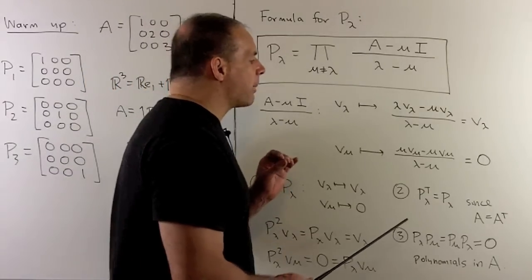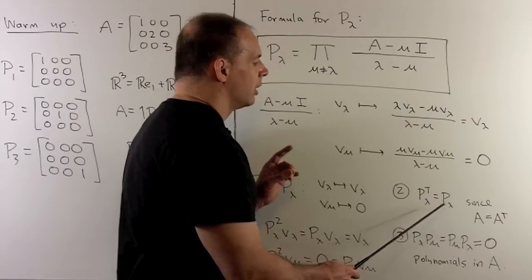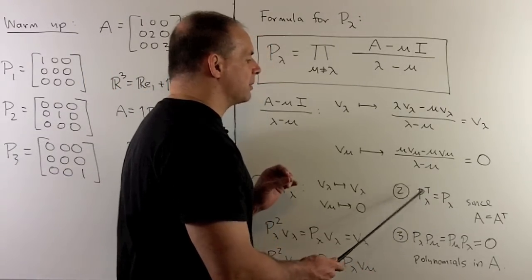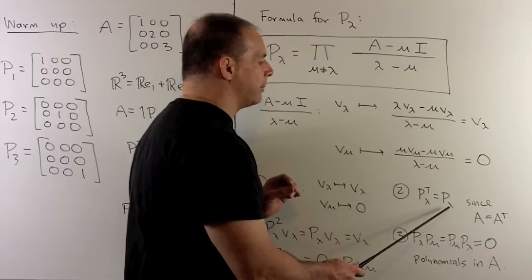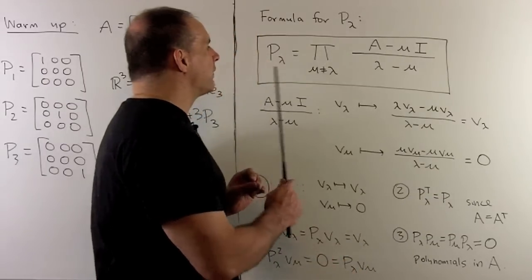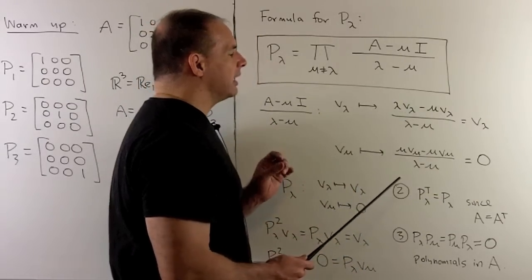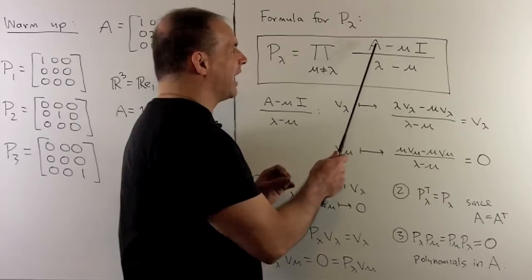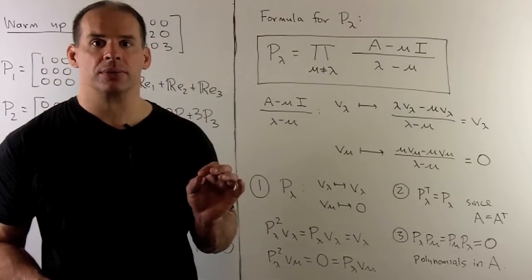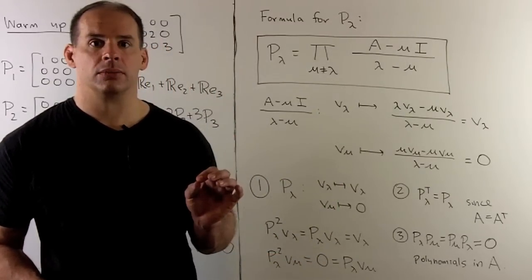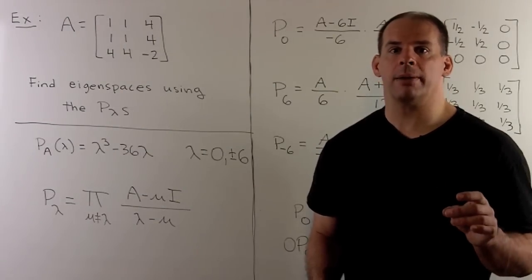To see that we have an orthogonal projection, I want to show that P sub lambda transpose equals P sub lambda. Looking at our definition, that follows immediately since A is symmetric — A equals A transpose.